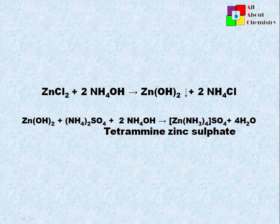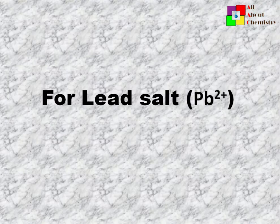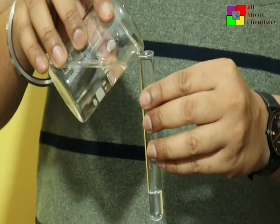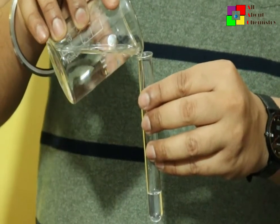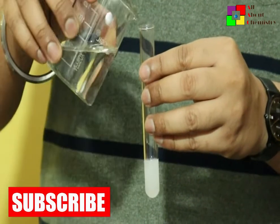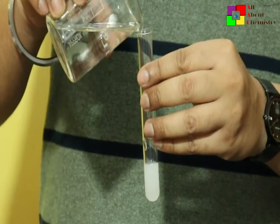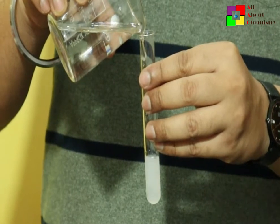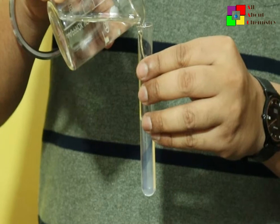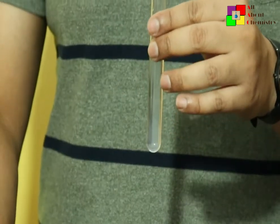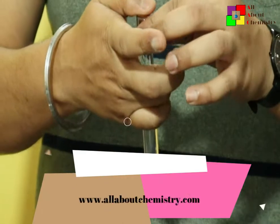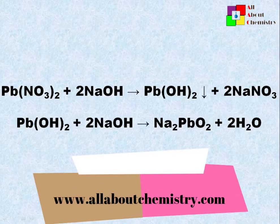Moving to lead salt — when lead salts are treated with sodium hydroxide solution, initially a chalky white precipitation is obtained, which is soluble when excess sodium hydroxide is added. This white precipitation is due to the formation of lead hydroxide. When excess sodium hydroxide is added, sodium plumbate is formed, causing the white precipitation to dissolve.